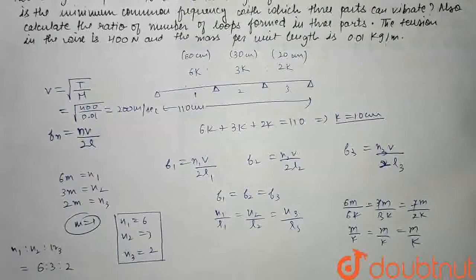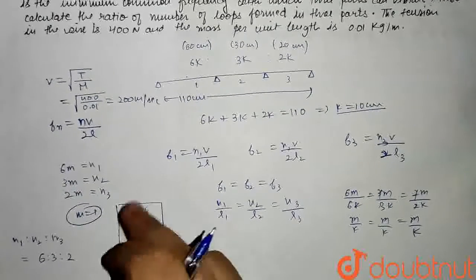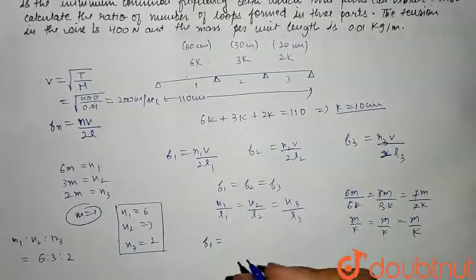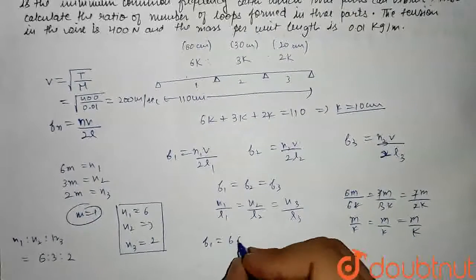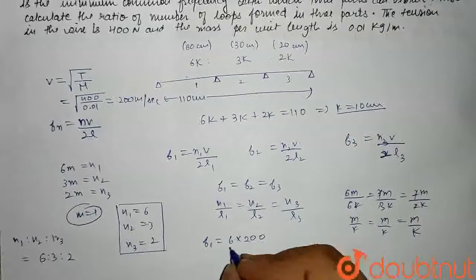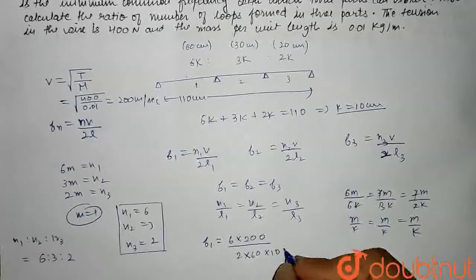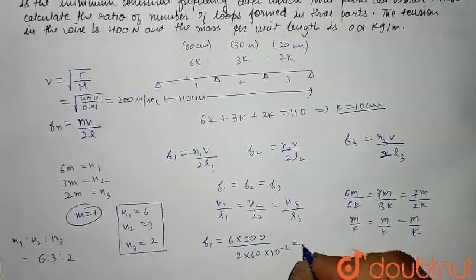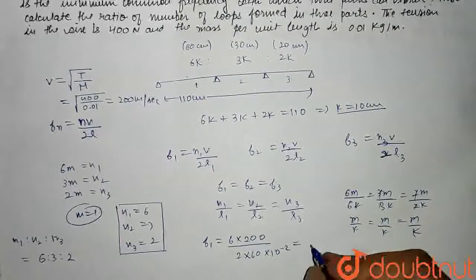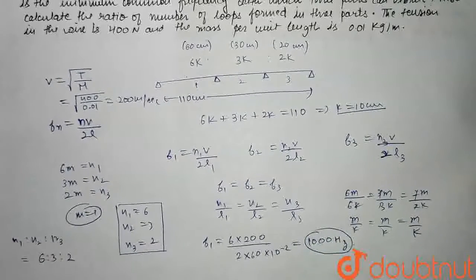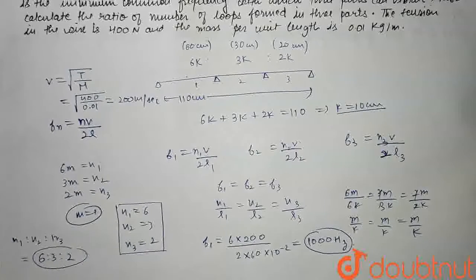Since F1 = F2 = F3, we can calculate any one. Using part 1: F1 = N1·V / 2L1 = 6 × 200 / (2 × 0.60 m) = 1200 / 1.2 = 1000 Hz. This is our minimum common frequency. So the two answers are: minimum common frequency = 1000 Hz, and the ratio of loops = 6:3:2.